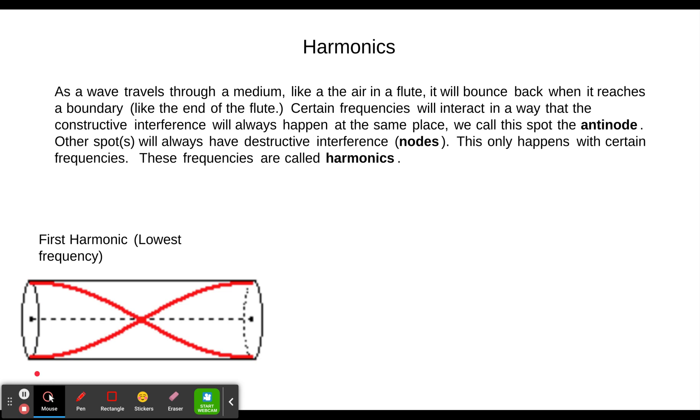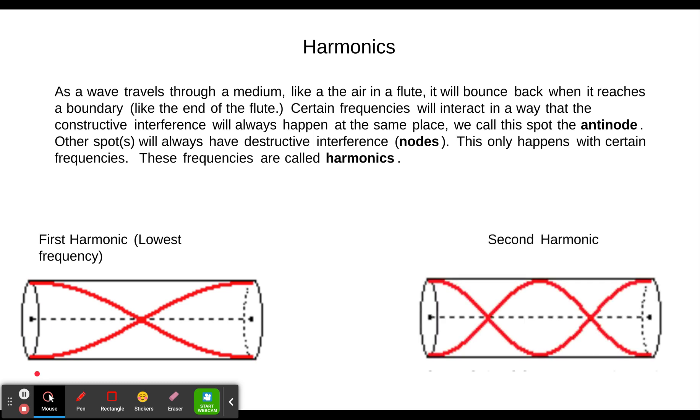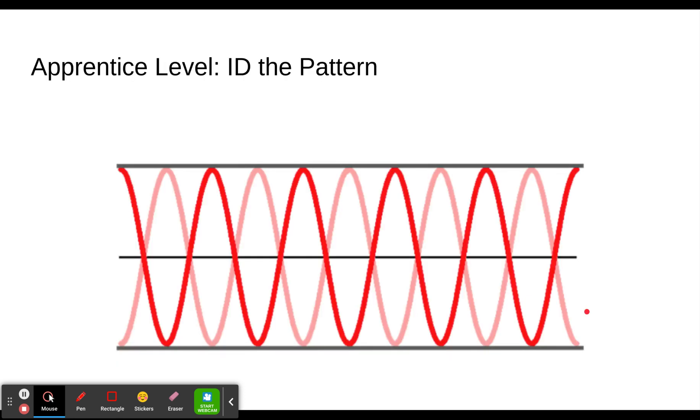If we go up to the second harmonic, we can see that once again we have to have anti-nodes at the ends, and we will now have two nodes. So last time first harmonic had one anti-node. This time first harmonic has one node. Second harmonic has two nodes, and you can probably imagine how we're going to do the apprentice level.